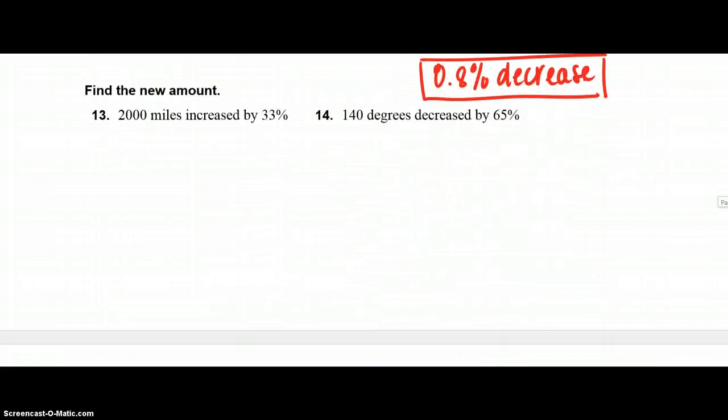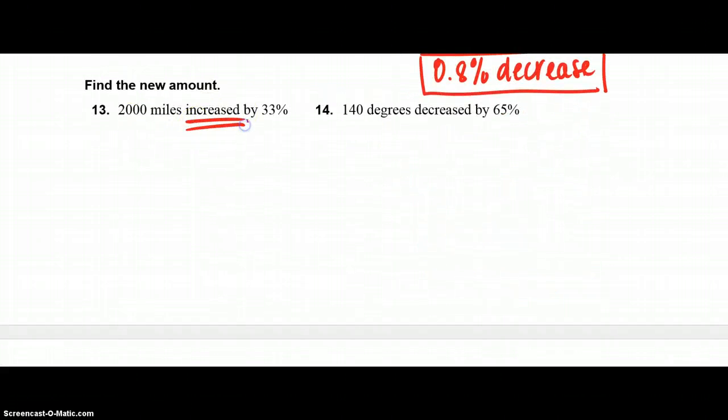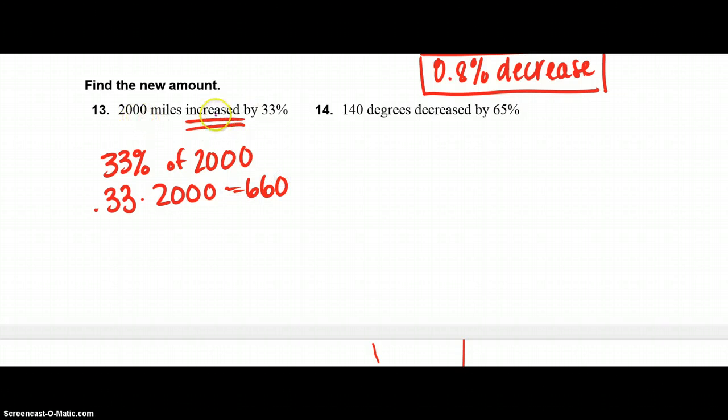Number 13, find the new amount. So 2,000 miles increased by 33%. So you have to find 33% of 2,000. Change this to a decimal, you take 0.33, you multiply that by 2,000, and you get 660. So 2,000 is increased by 33%, which is 660. So I take 2,000, I add 660, and my final answer is 2,660, and that is miles.